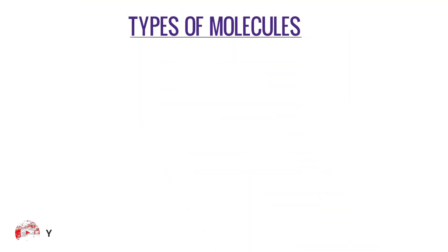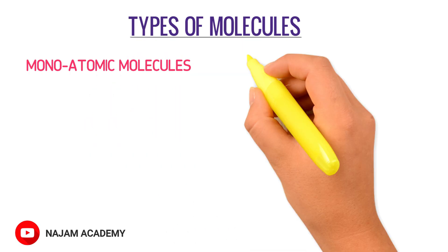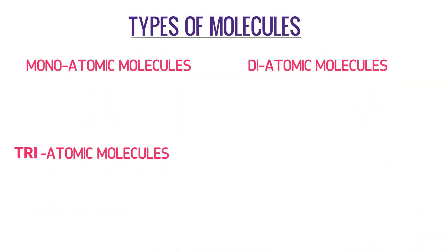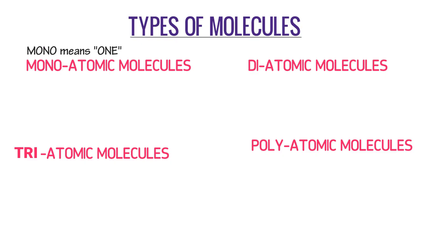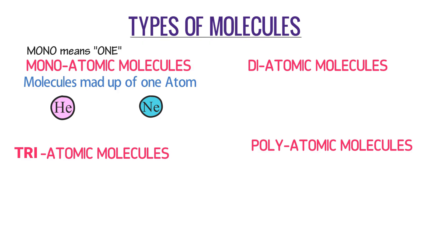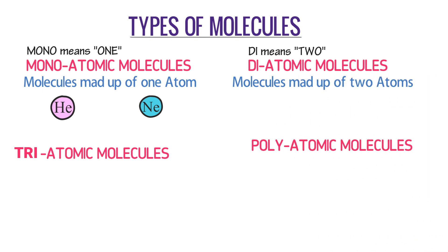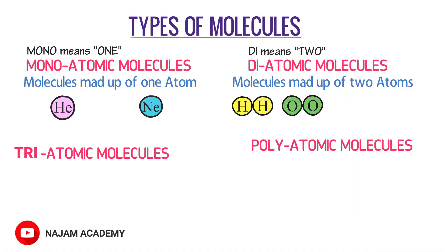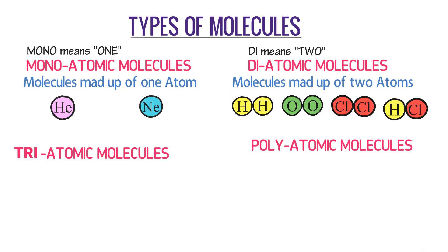You should also learn the types of molecules: monoatomic, diatomic, triatomic, and polyatomic molecules. The word mono means one — molecules made up of only one atom, for example helium, neon, and argon. The word di means two — molecules made up of two atoms, like hydrogen molecule H2, oxygen molecule O2, chlorine molecule Cl2, and hydrochloric acid HCl.